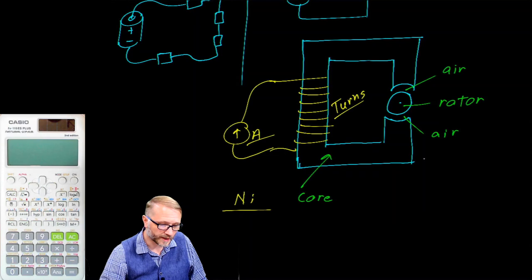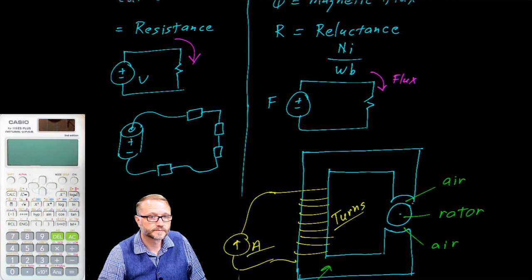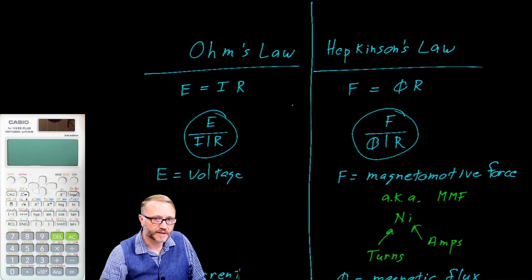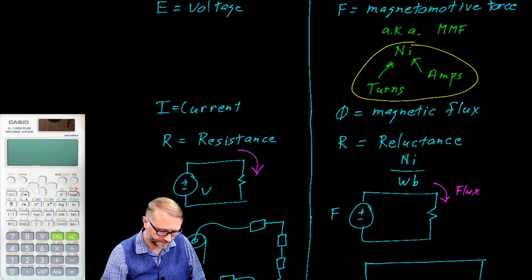If you find this material interesting, you might want to take a physics class or advanced electrical engineering classes where they do all the calculations with magnetic circuits. For our short-term goals, just understand that both magnetic and electrical circuits may be modeled using the same thought processes. And remember amp turns — that's very important to us.